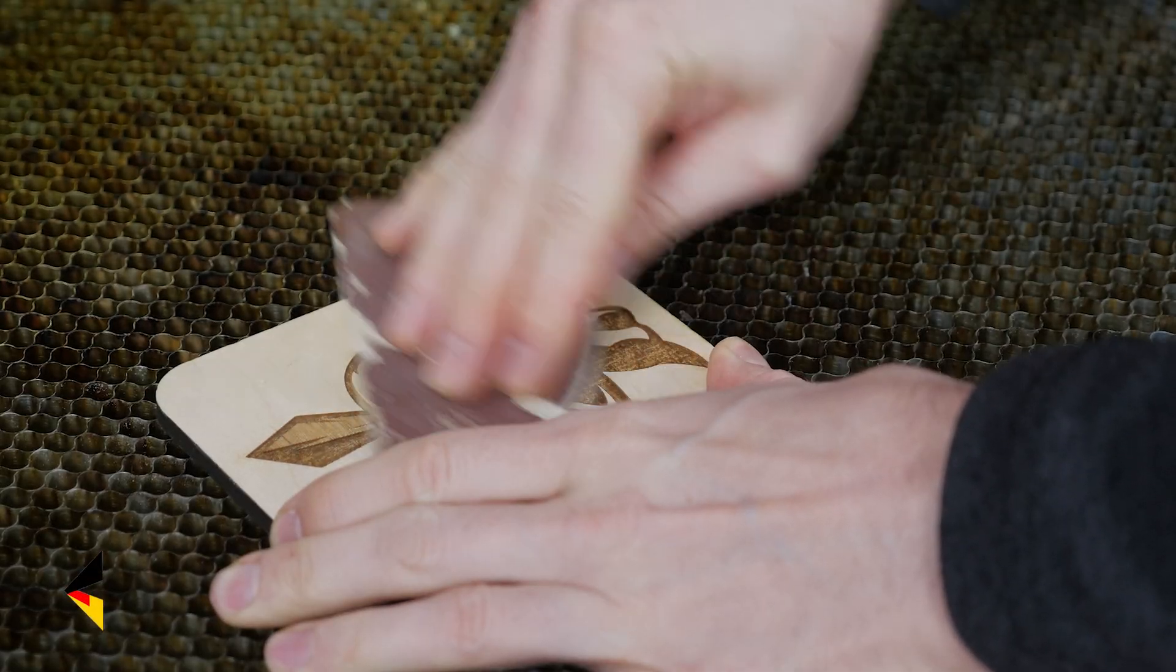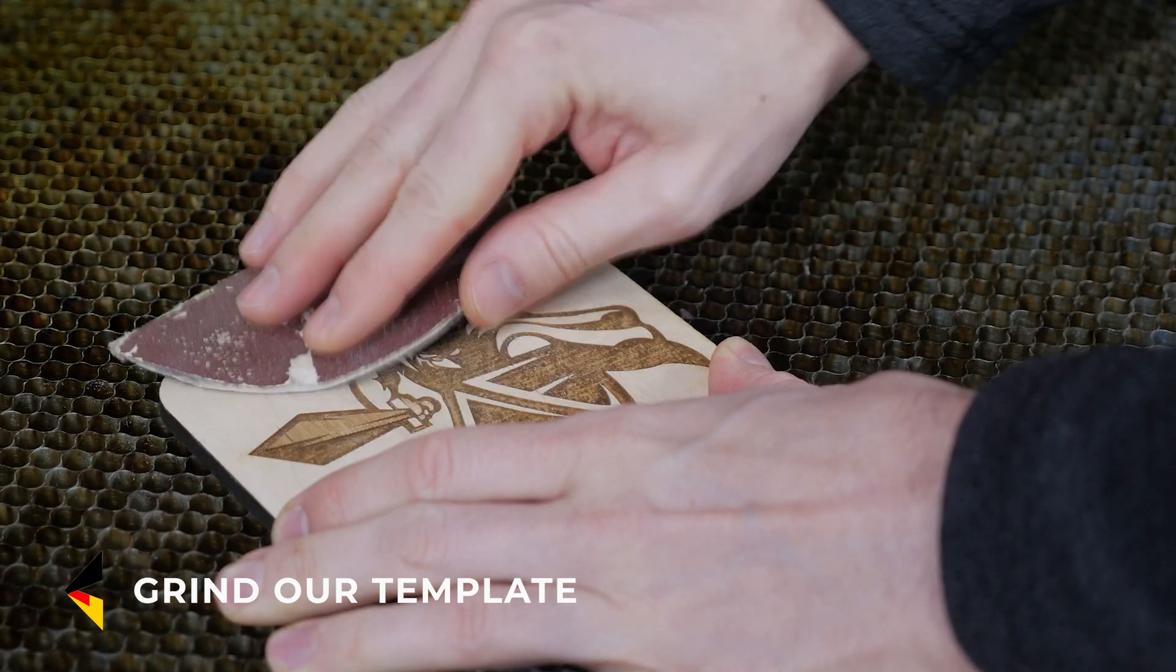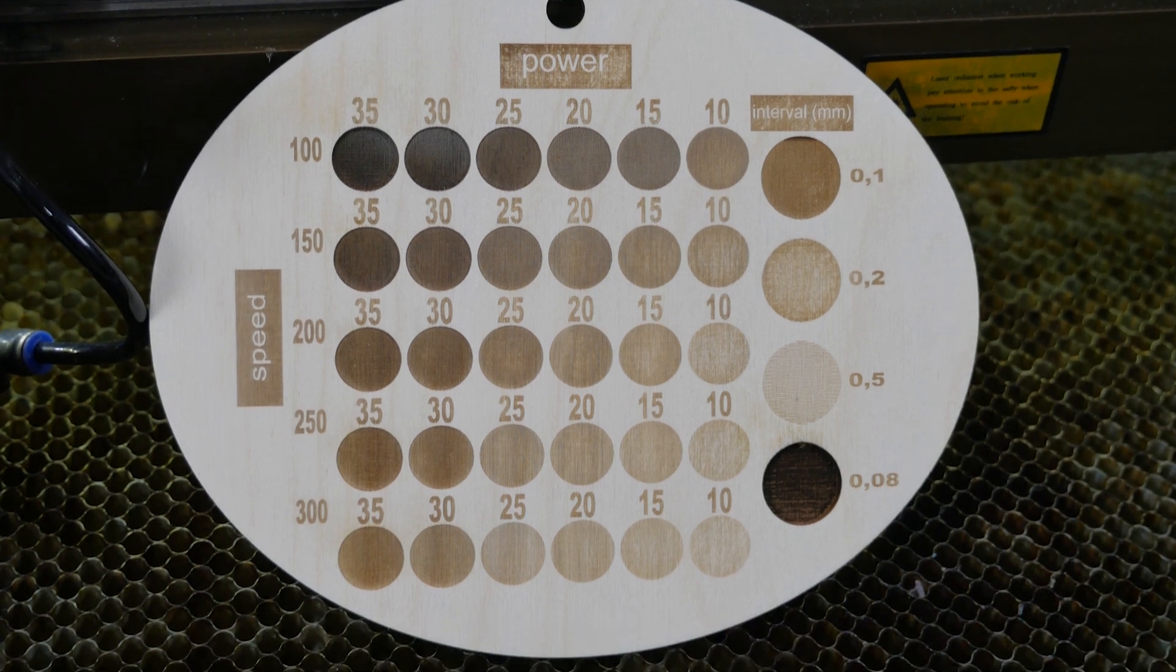The final step is to grind our template to remove the fouling from the engraving at high power. Such templates are handy for keeping track of the dynamics of laser tube power reduction.